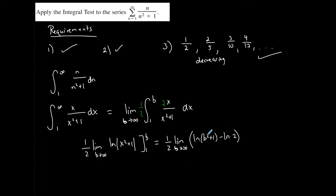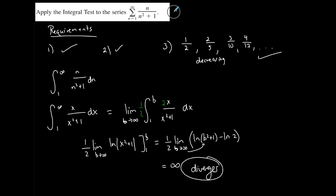If I plug in infinity, I get infinity, and infinity minus a number, times a half, is still infinity. This means the integral diverges, which means based on the integral test that this series also diverges. So if I'm using the integral test — and this is only one test, not the only one — and the integral diverges, I can conclude the series diverges. In order to use the integral test, all three requirements must be checked and met.